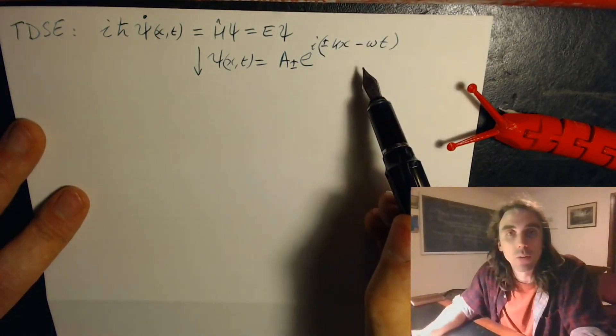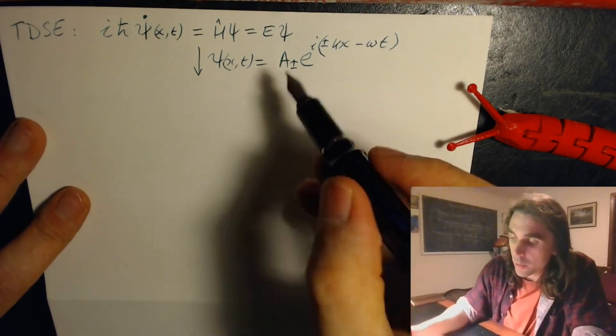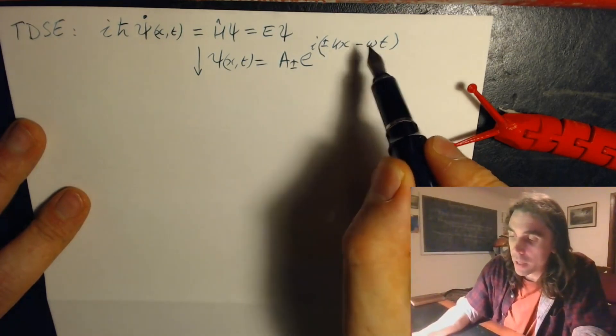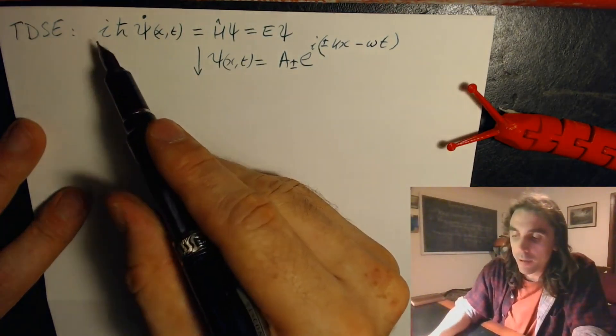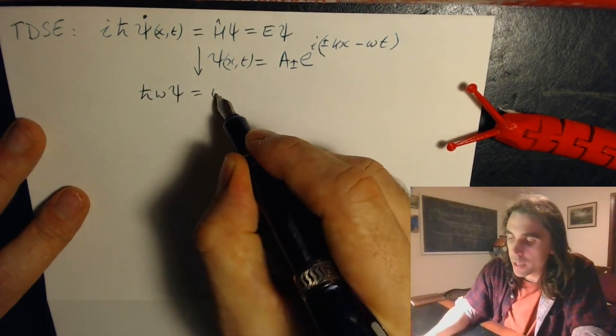When we substitute this in we bring down minus i omega, there's an i here already, the i cancels with minus i, and we find that h bar omega psi equals e psi.